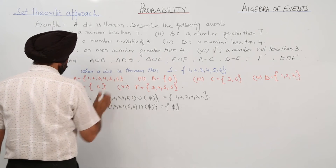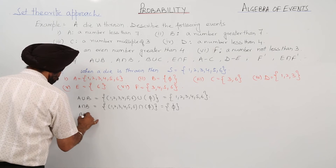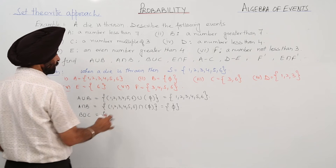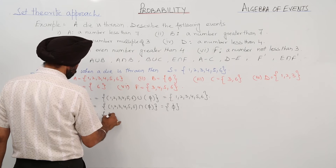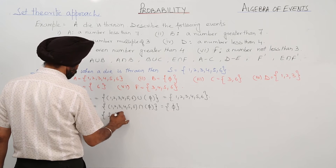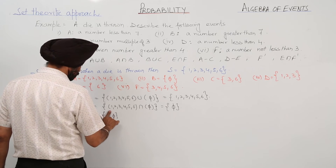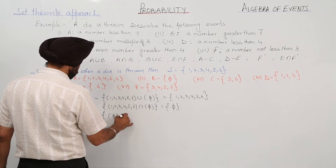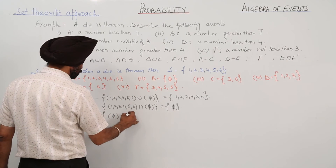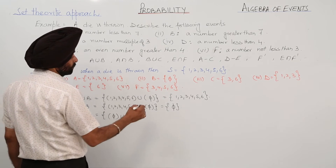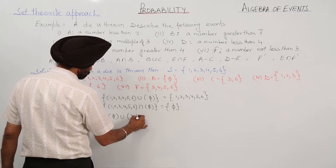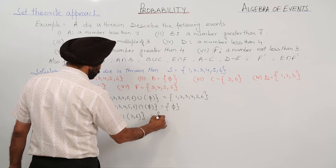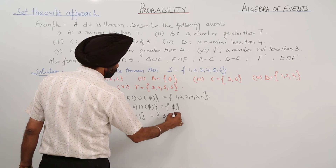Then B union C: B is empty and C is {3, 6}, so B union C gives us {3, 6}.